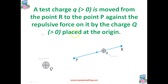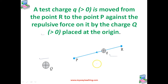Let us take both Q and q as positive — both greater than zero. We assume the test charge q is so small that it does not disturb the original configuration, namely the charge Q at the origin. In bringing charge q from R to P, we apply an external force F_external just enough to counter the repulsive electric force F_E — moving against the electric field created by charge Q.